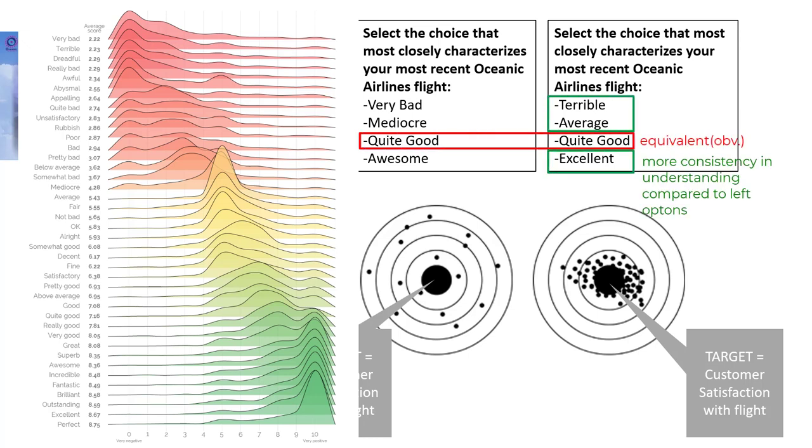Because individuals' understanding of the words are more consistent, we would expect that a measurement using the words terrible, average, quite good, and excellent would generally be more reliable. Whereas words like very bad, mediocre, quite good, and awesome, due to more discrepancy in how people interpret those words, might still render ultimately a valid measurement, but it would do so in a rather unreliable way.